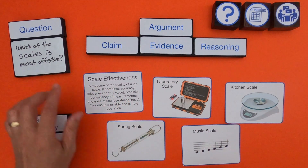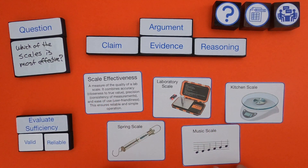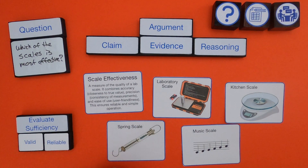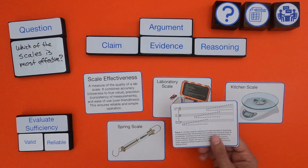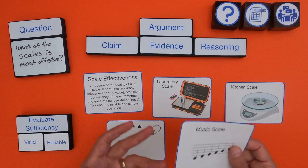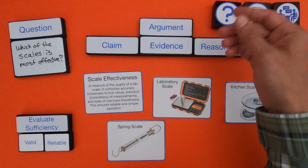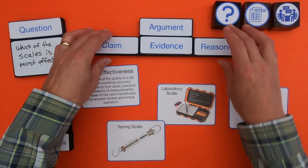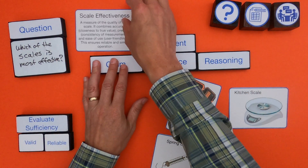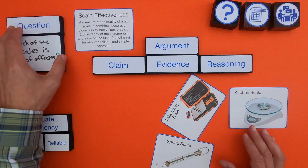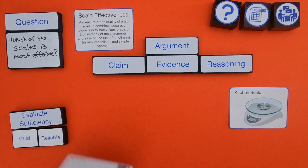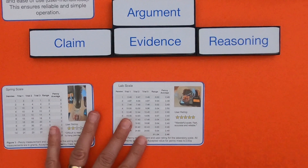We're going to have a lot of evidence on the back of these cards, but the first thing we should do is determine which evidence is not valid at all. We're measuring the mass of a penny to see how precise each scale is. You can tell right away that a music scale is not going to be helpful — it shares the word 'scale' but it's not valid to what we're doing, so I'm just going to get rid of it.